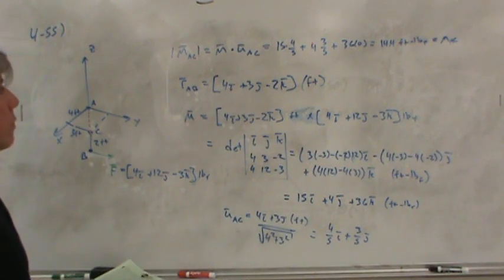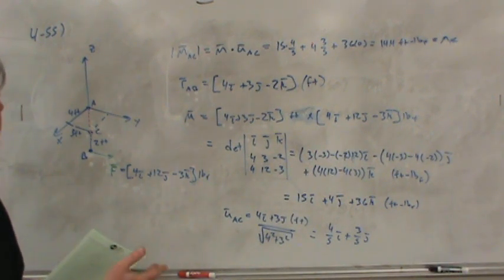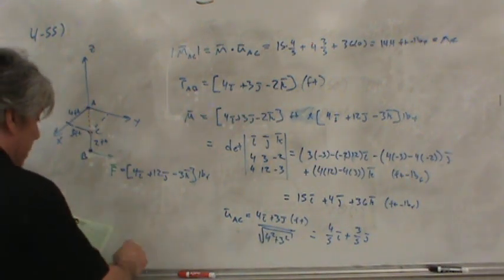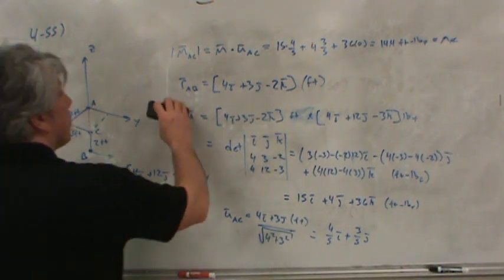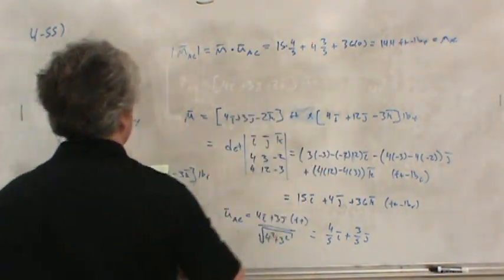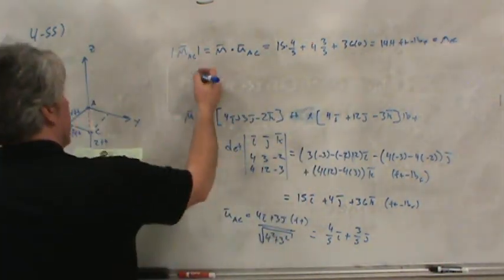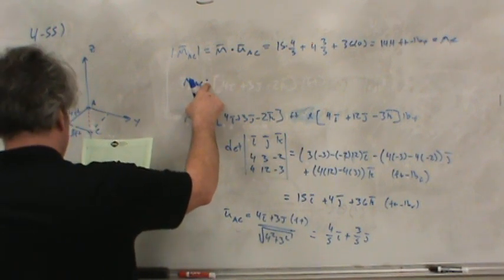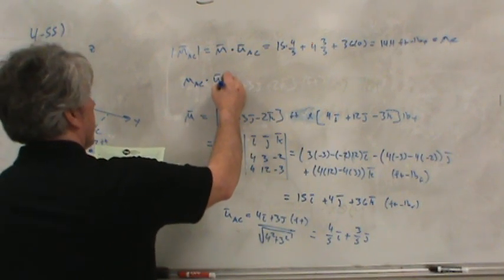So, this is the moment or the magnitude of the moment of the force F about line AC. Now, if we want to write that as a vector, we want to know what direction this lies in, all we have to do is multiply that magnitude by line AC. So, MAC times, it's not a dot product, it's just multiplication, U AC.